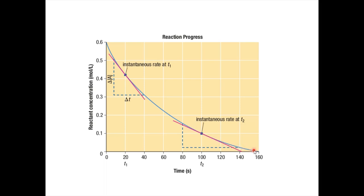It's not a straight line. When we looked at rate laws, the instantaneous rate r is dependent on the concentration of the reactants. As the reactant drops, there's less reactant available, so the reaction rate slows down. Because the reaction rate slows down, the amount of reactant lost also slows down. Instead of a straight line, you get a curve that starts with a large slope and ends with a smaller slope.